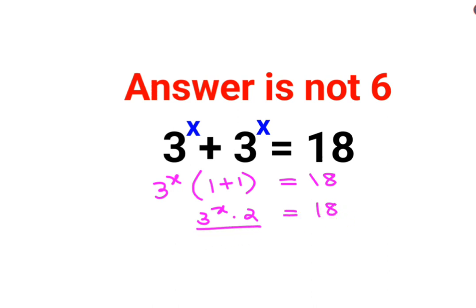In order to find the value of the variable, we will shift all the numbers on the other side. So this is cancelling. So we are getting 3 raised to x equals to 9.